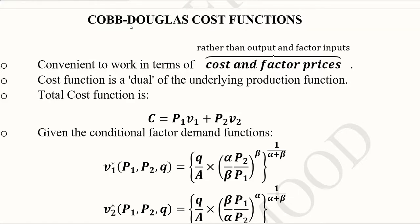After explaining the Cobb-Douglas production function, we shall now try to understand the Cobb-Douglas cost function. Since it is the same family of functions, it should be based upon the Cobb-Douglas production function or the demand functions developed by the Cobb-Douglas production function. We are studying the Cobb-Douglas cost function because sometimes it is convenient to work in terms of cost and factor prices instead of output and factor inputs.